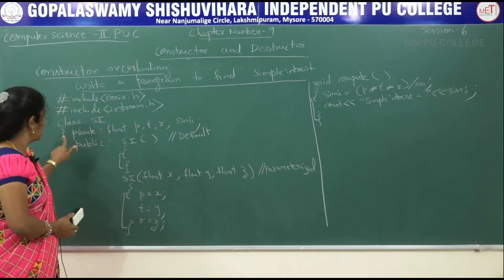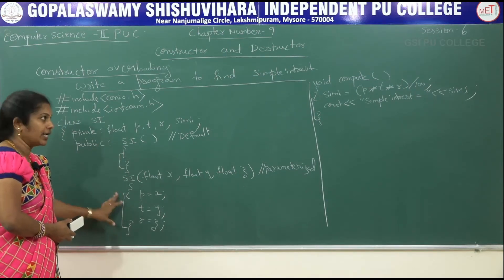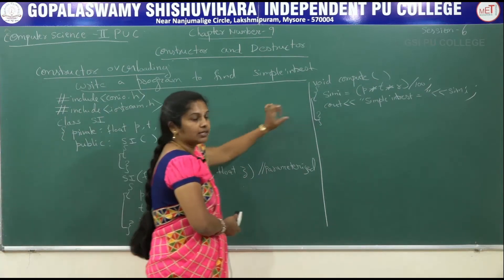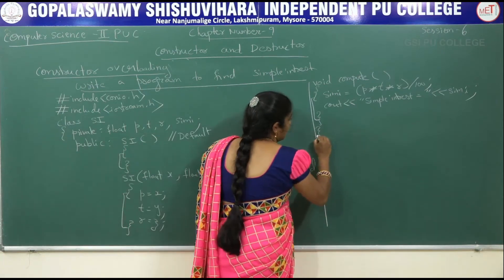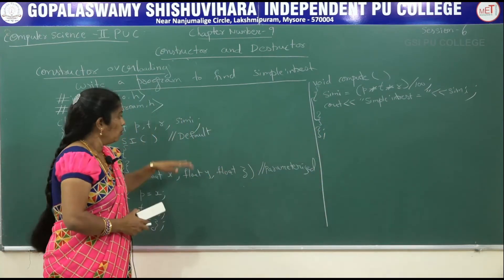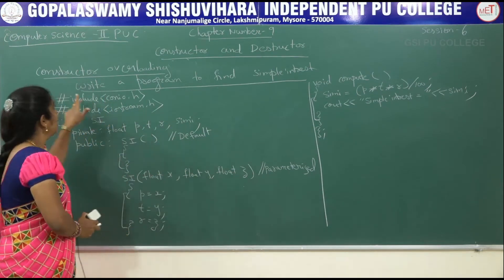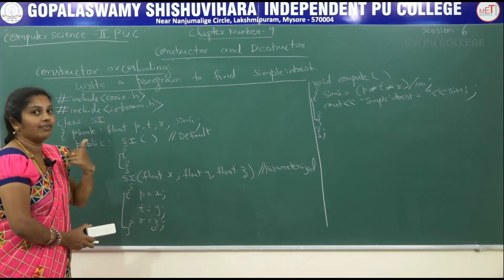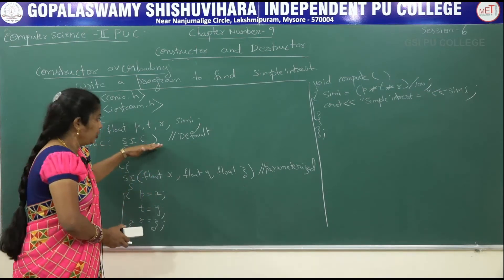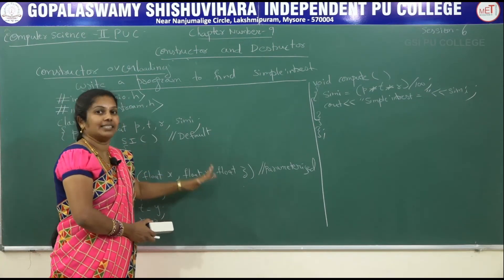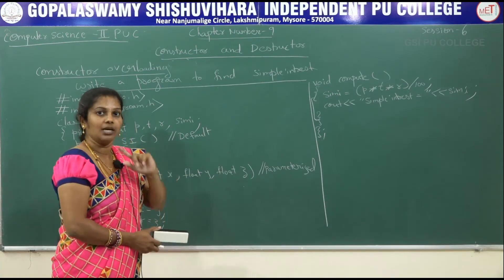Then remaining, which ones do I have to close? I have to close the class. Default constructor is closed, parameterized constructor is closed, and the compute function is also closed. The remaining is to close the class — flower bracket then semicolon. More than one constructor can be used in the same program — that is nothing but Constructor Overloading. The compiler will decide which version of the constructor to be executed, depending upon the arguments and data type.